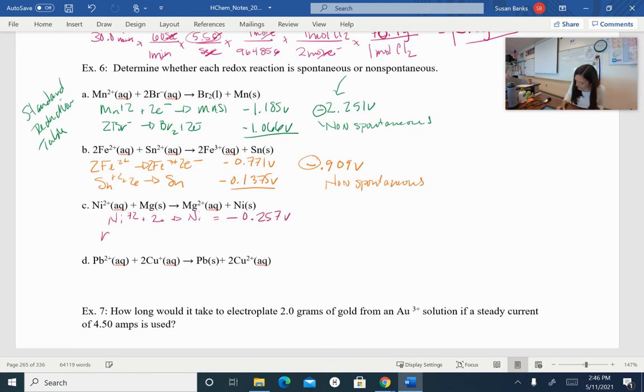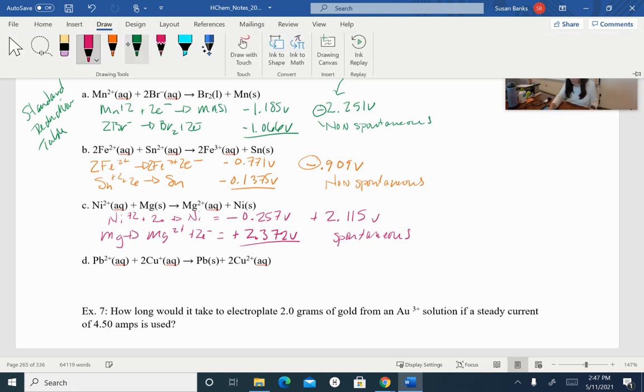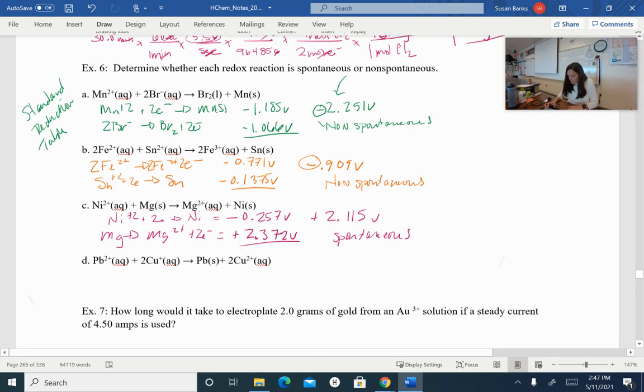And if I have magnesium going to magnesium plus two plus two electrons, I get a voltage of positive 2.372 volts. So when I add that up together, I get 2.115 volts. So this is spontaneous. This will run by itself. So I don't have to hook up a power source on this. Did you do okay on that one?